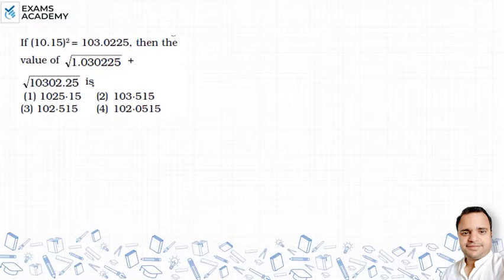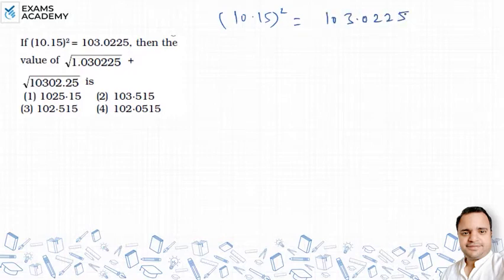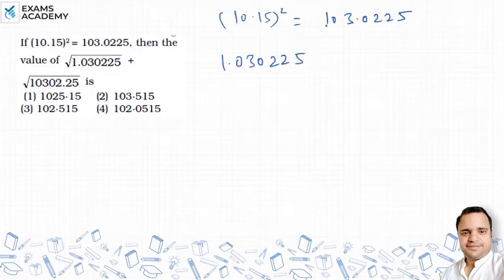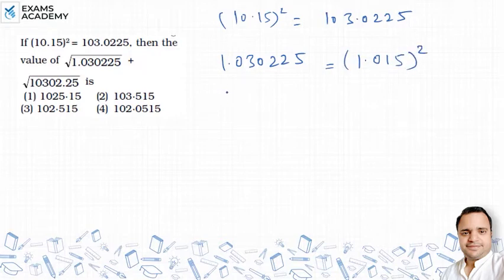10.15 squared is equal to 10302.25. Now, under root 1.03025 — we look at this value carefully. Since squaring a two-digit number gives four digits, for a decimal with three digits we need six digits after the decimal. So we take the square of that form. Similarly, we look at the other value: 10302.25.